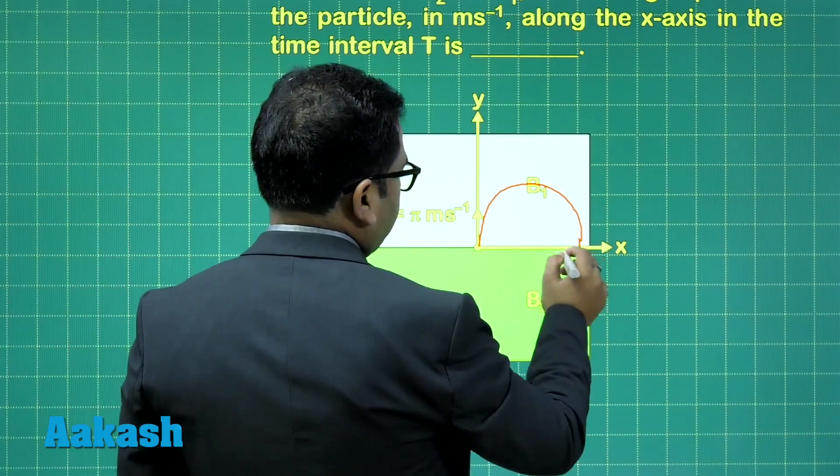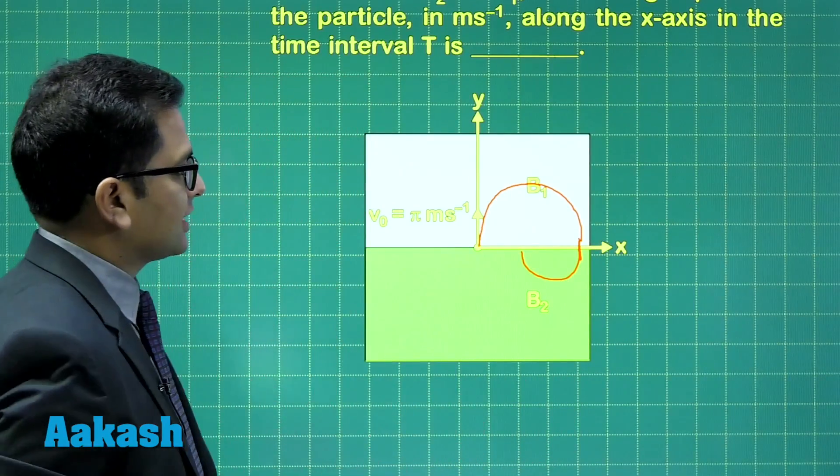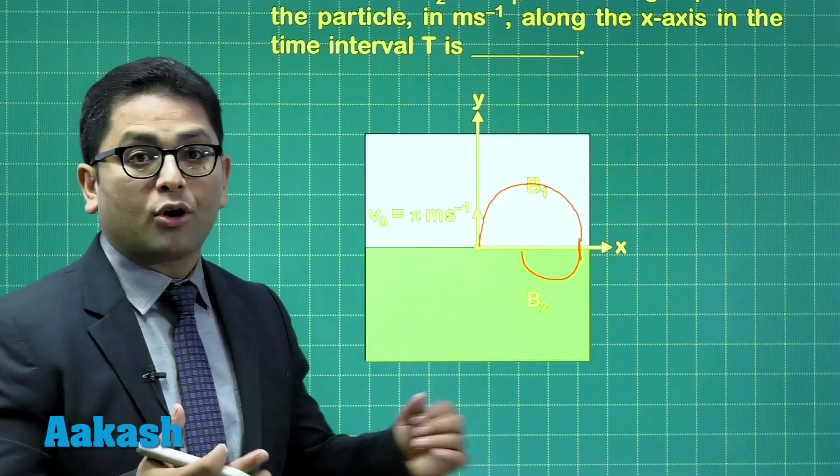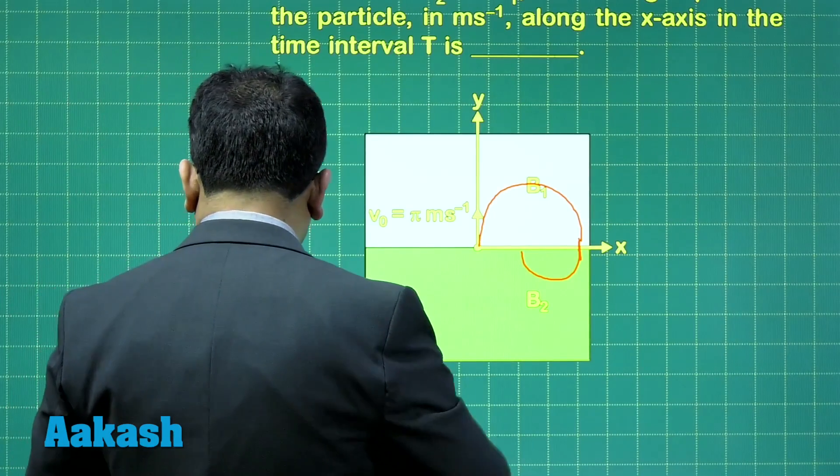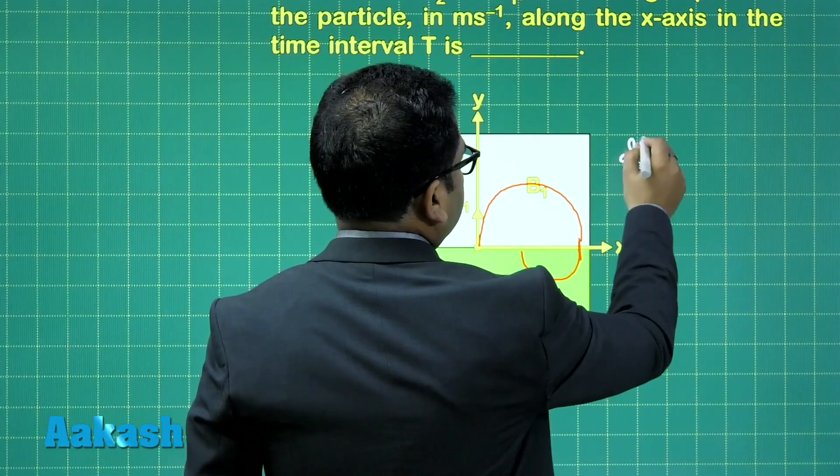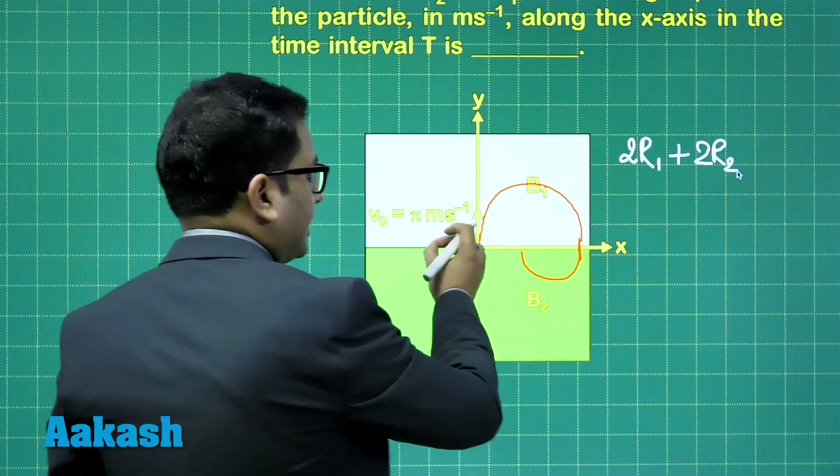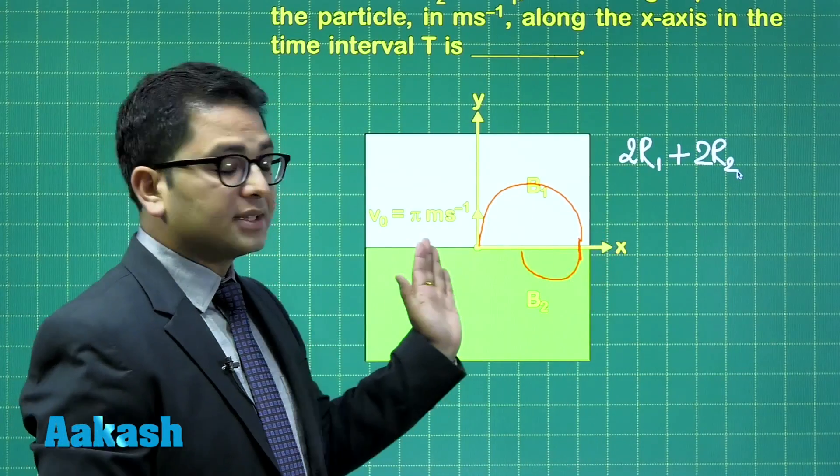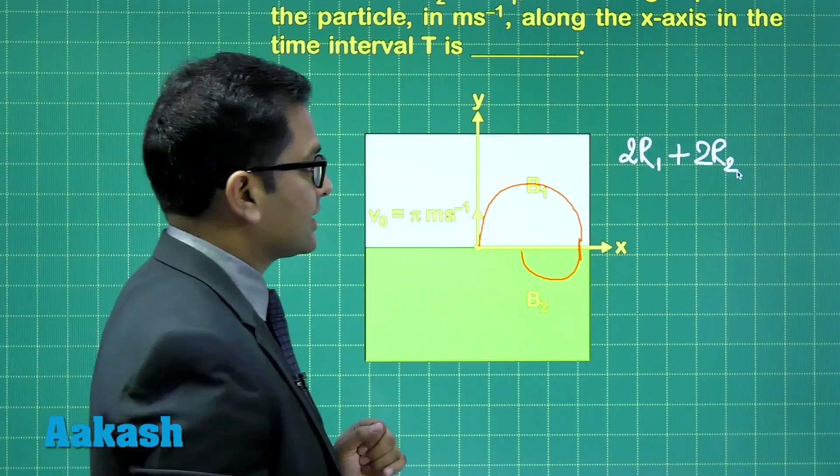And after that, when the velocity would come there, the bending would come in this direction. So, it would be something like this. That's the trajectory. And you can understand the average speed along x-axis. So, the initial, if you see, the forward direction is twice times the first radius. So, twice times the first radius plus twice times the second radius in the backward case. 2r, the diameter of the first, 2r, the diameter of the back. So, that's the total distance along x-axis.